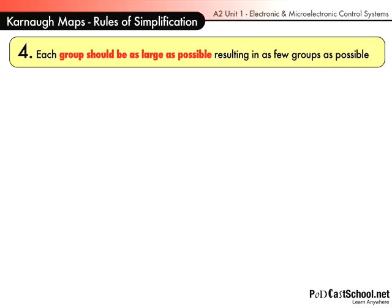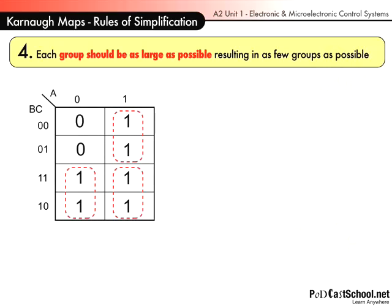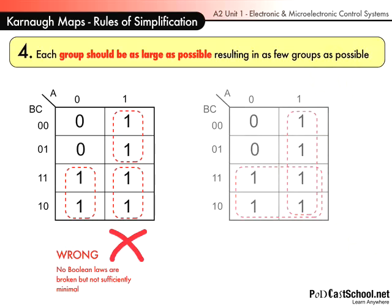Rule number four is each group should be as large as possible, resulting in as few groups as possible. Now, this is actually, it's not wrong, but it's definitely not minimal. The way that that should be grouped is like this, where you group your big four at the bottom and then another four at the side.